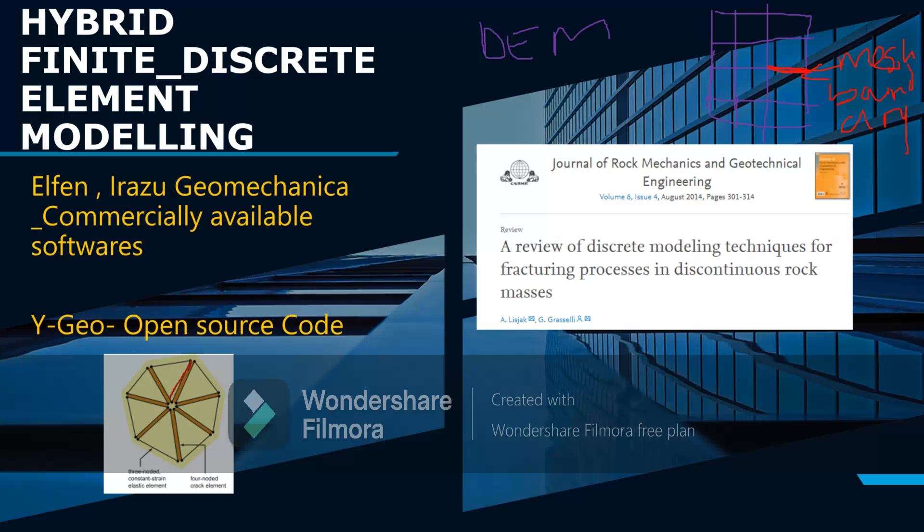When fracture occurs, a four-node boundary element is inserted that becomes the fracture, as shown.